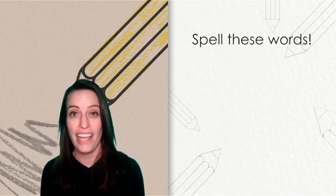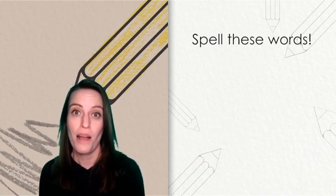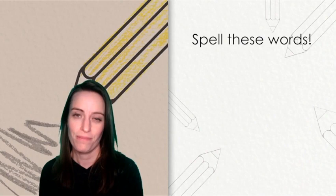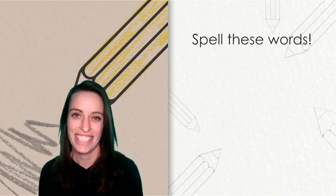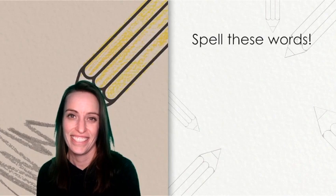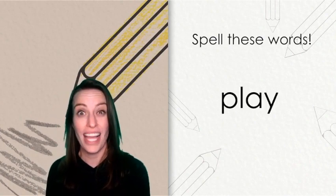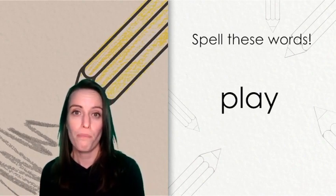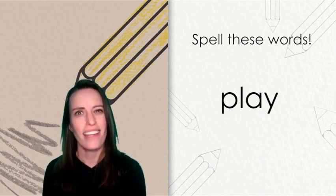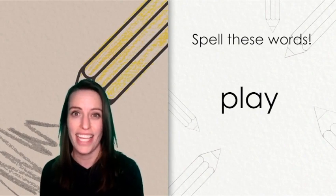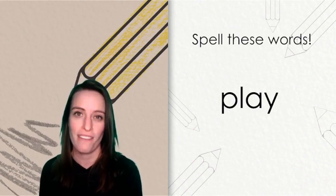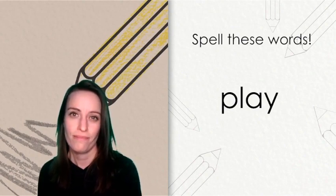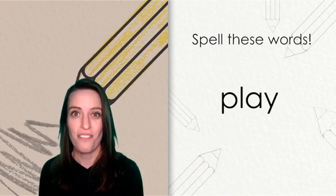The first word is play. Let's play a game. Play. Here is the word play. It starts off with the consonant blend PL. The AY is the vowel team that makes the A sound at the end of the word play.